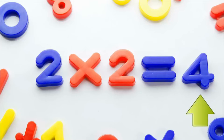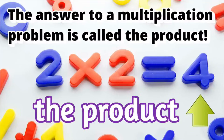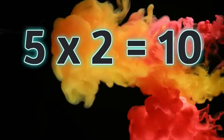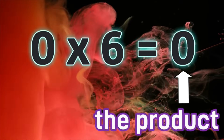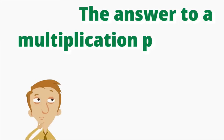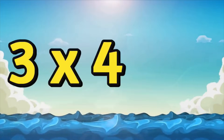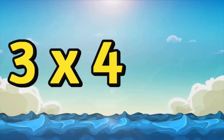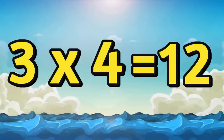It's question time! What is the answer to a multiplication problem called? The product. The answer to a multiplication problem is called the product. For example, five times two equals ten — ten is the answer, so it's called the product. Zero times six equals zero — zero is the product. Let's look at a few more. What is three times four? Twelve. Three times four equals twelve. Twelve is the product — it's the answer to this multiplication problem.